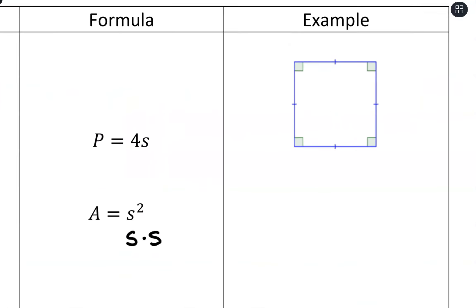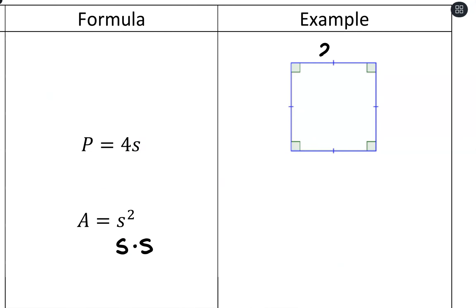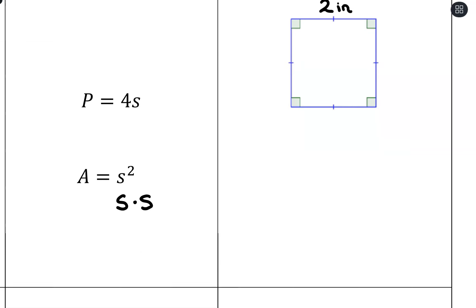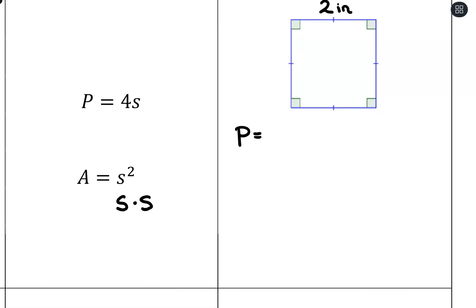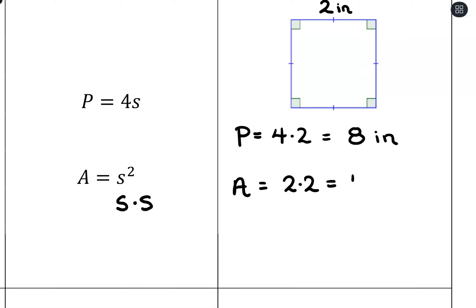For example, let's say one side of the square is two inches. Then the perimeter would be four times two, which is eight — so eight inches. For area, we take two times two, which is four, and for area we use squared units, so it would be four square inches. The idea being you can count up that we would have four squares inside.